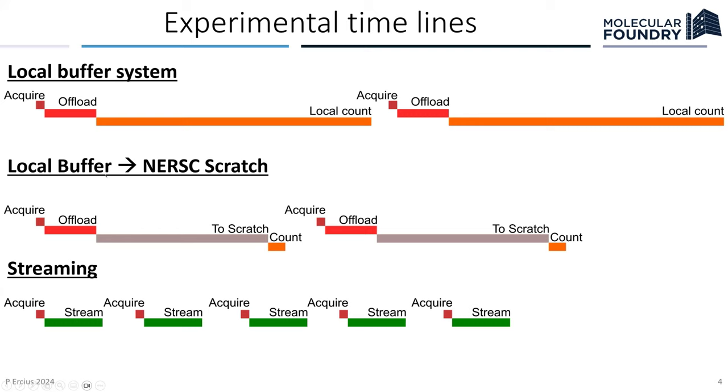They can't acquire a new data set until this whole process is done basically. So our local counting is just kind of basically one node and it can do it in about eight to 10 minutes. So once we added NERSC, then we could go from local buffer to NERSC scratch. And almost all of this, we had to offload, which was writing to disk locally. Then we had to pull the data to NERSC scratch. And almost all of that was basically the file transfer I/O. So the counting job, the counting part of it, the actual processing job was absolutely tiny and kind of on the same scale as the acquire.